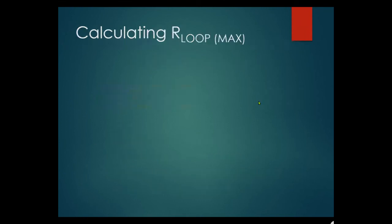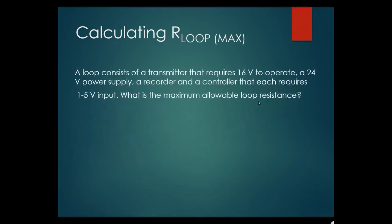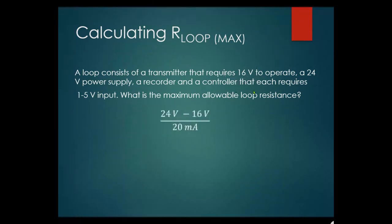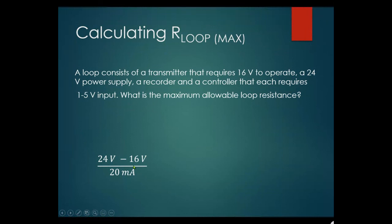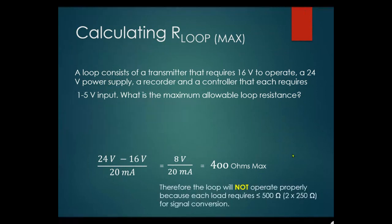The 20mA is the upper range current value. Example: a loop has a transmitter requiring 16 volts to operate, a 24 volt power supply, a recorder and a controller each requiring 1 to 5 volt input (each needing a 250 ohm resistor). Maximum allowable loop resistance: (24V − 16V) ÷ 0.020A = 400 ohms. Therefore the loop will not operate properly because each load requires 250 ohms — two loads equals 500 ohms, which exceeds the 400 ohm maximum.